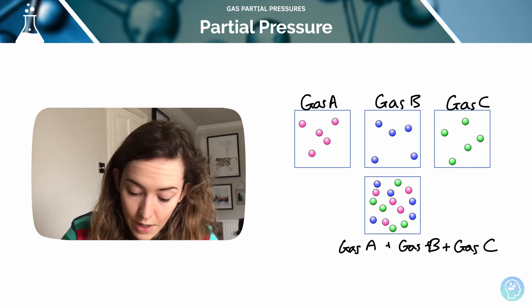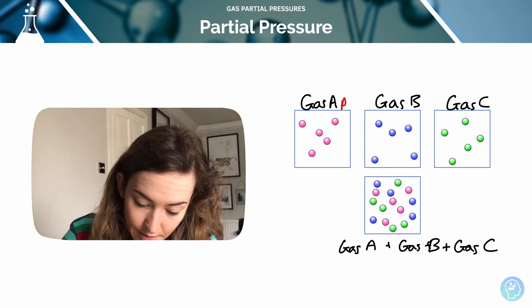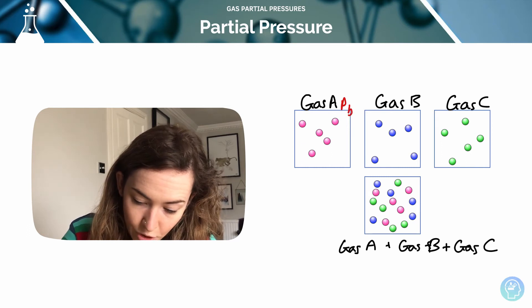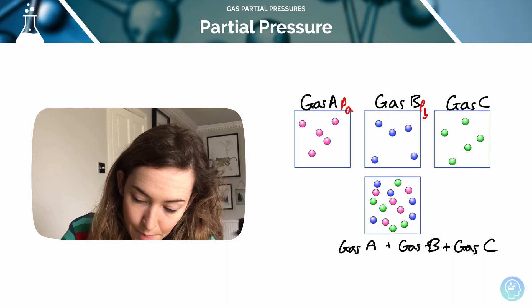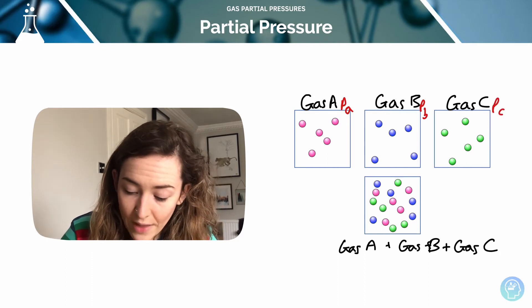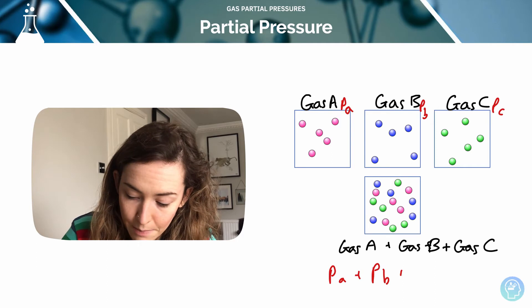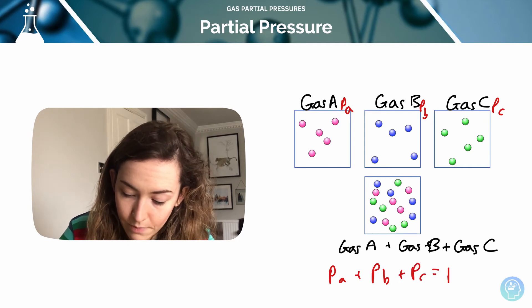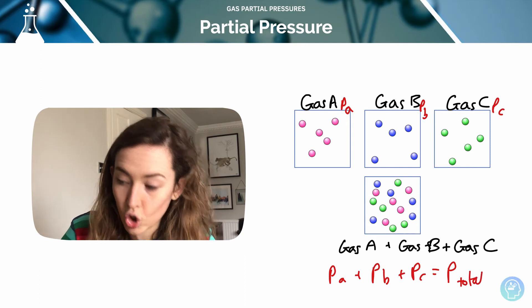And for each of those I'm going to refer to it as PA, so my partial pressure of gas A, my partial pressure of gas B and my partial pressure of gas C. If we add those together, so PA plus PB plus PC, those partial pressures, we get P total.